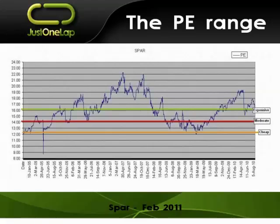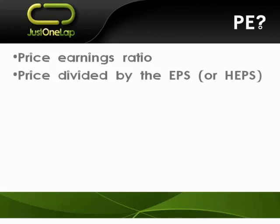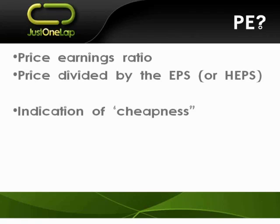So, step back a moment — PE, price-earnings ratio. The key driver of a price-earnings is price divided by either earnings per share or headline earnings per share. Obviously, price changes on a daily basis, and headline earnings change every six months as numbers come out.